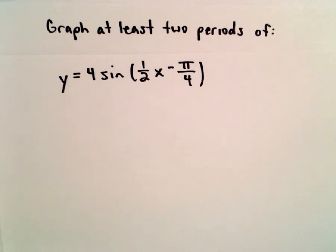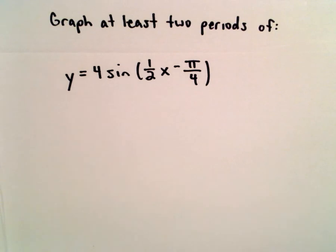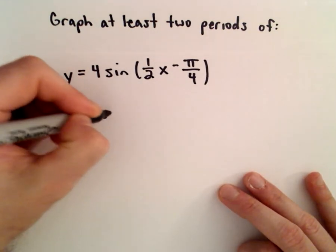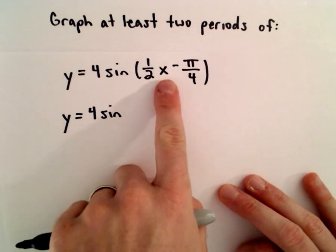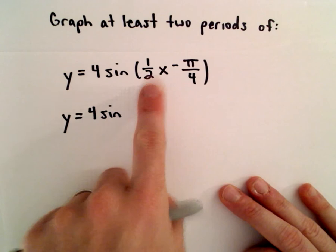Okay, in this example I'm going to graph two periods of y equals 4 times sine of 1 half x minus pi over 4. The first thing I'm going to do is make the coefficient on the x in the parentheses equal to a positive 1. So I'm basically going to factor out its coefficient.